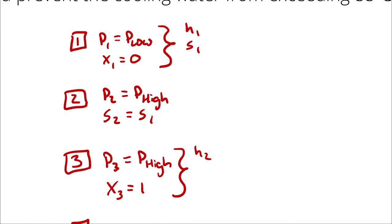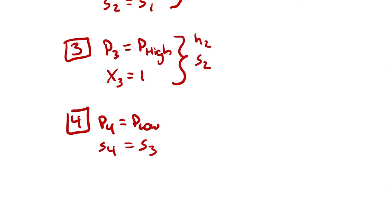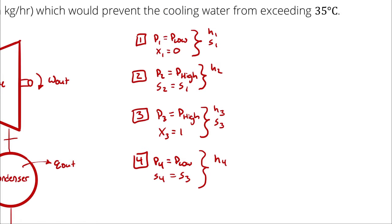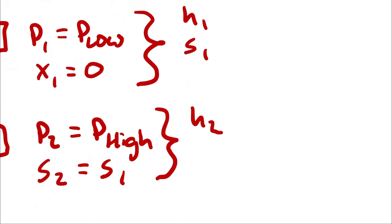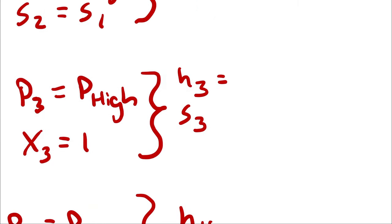At state 1, I want to look up H1 and S1. With that S1, I can look up H2. At state 3, I will look up H3 and S3. And at state 4, I will use S3 to look up H4. I want the four enthalpies, and I need S1 and S3 to get there. I'm also going to add specific volume at state 1 into the mix for reasons that will make sense later. Our working fluid is water, so our tables are A2 through A5.